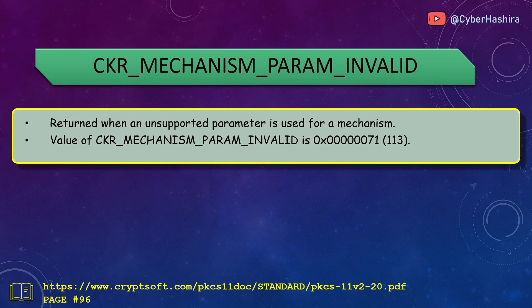CKR_MECHANISM_PARAM_INVALID is returned when an invalid parameter is passed into a mechanism. Some mechanisms require a parameter such as an IV (initialization vector). If a mechanism needs an IV and you don't pass one, you would get CKR_MECHANISM_PARAM_INVALID. Its value is 71 and is on page 96.